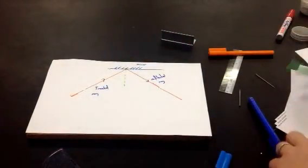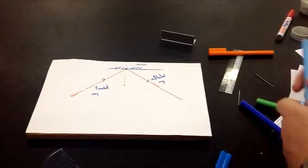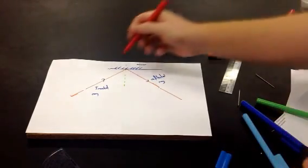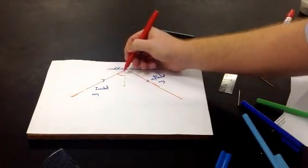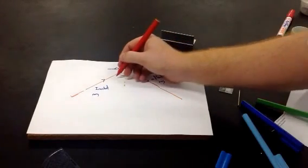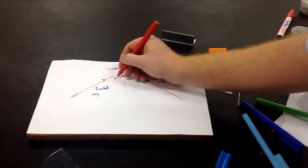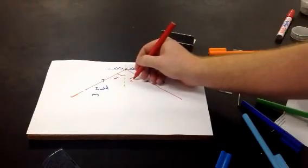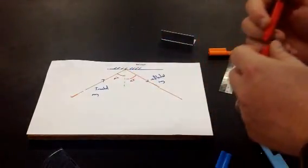And then the last thing to never forget is that we measure our angles of incidence and angles of reflection from the ray to the normal every time. So this is the angle of incidence, and this is the angle of reflection.